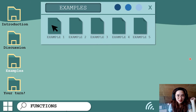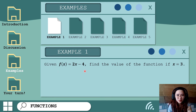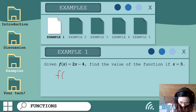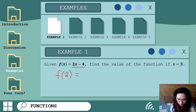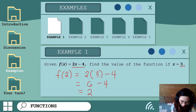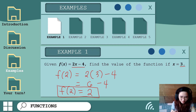Example number 1: given f of x equals 2x minus 4, find the value of the function if x is equal to 3. We need to replace the variable x with 3. So f of 3 equals 2 times 3 minus 4. Performing the operation: 2 times 3 gives us 6, then minus 4 — so 6 minus 4 equals 2. The value of the function at 3 is 2.